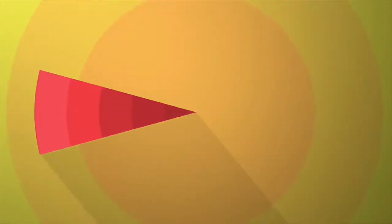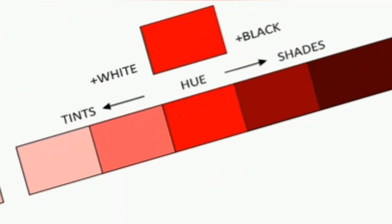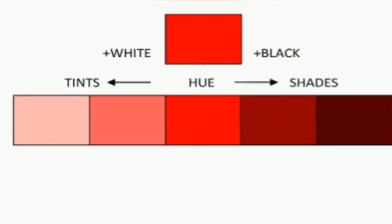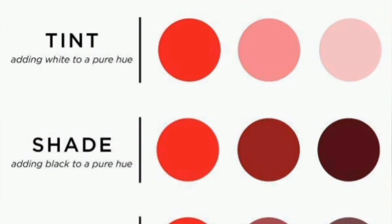Another element of design is value, which tells how bright or dark an object is. Value is divided into two: tinting and shading of color. Tinting of colors is achieved by adding white to a color, and shading of color is achieved by adding black to color.